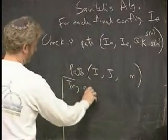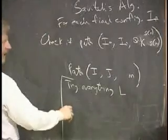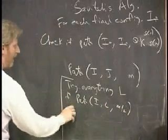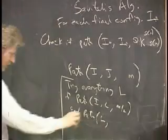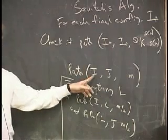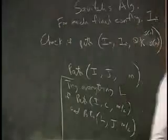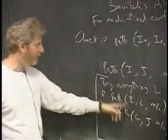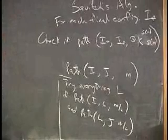He says, try everything. And, we'll call everything L. Try every single L. And, see if the path from I to L can be reached in half that many steps. And, the path from L to J can be reached in half that many steps. If you want to figure out if there's a path from configuration I to configuration J in this many steps, try every single L there is in the whole world. Try them all. Try all Q, K, S of N times S of N. Try them all and see if there's a path from I to L with M over two steps. And, if there's a path from L to J with M over two steps. If any one of these Ls work, you stop and say yes. If none of them work, you stop and say no.